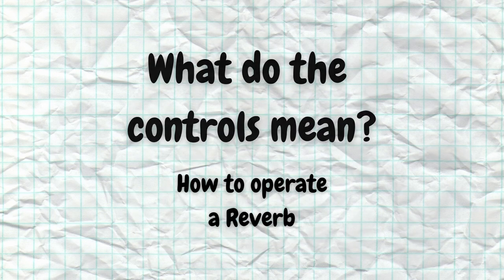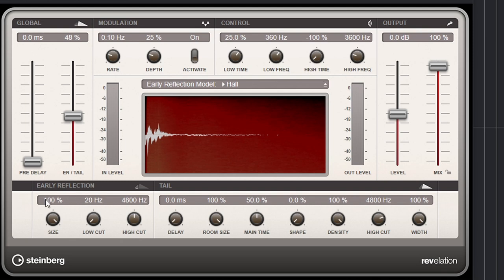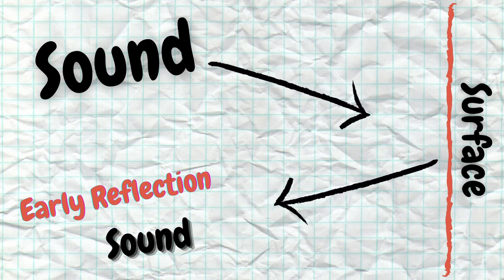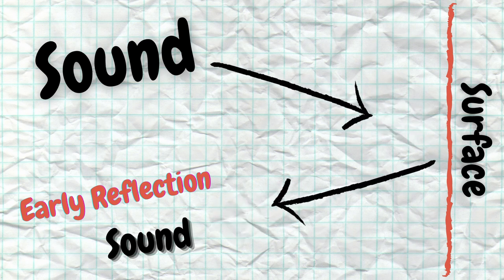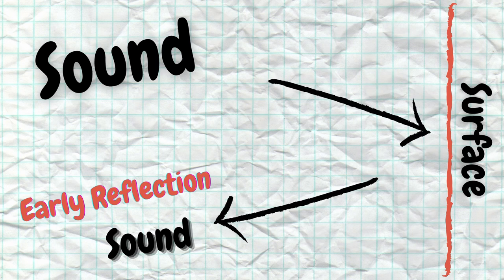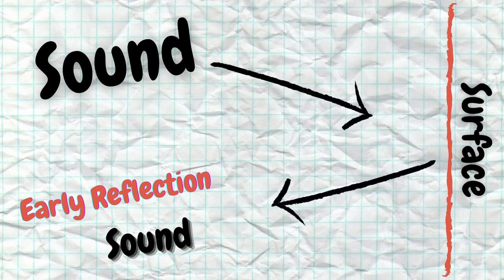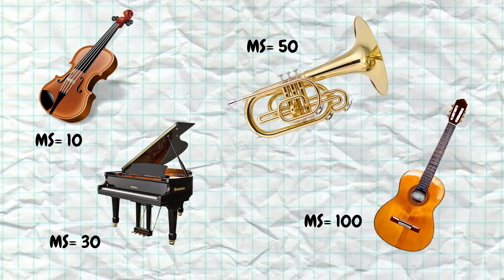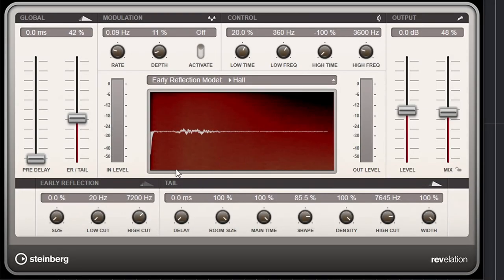What do the controls mean? Most reverbs are divided into early reflection and tail. Early reflection is a short delay, usually within 100 milliseconds — it simulates the time it takes for the original sound to bounce back from a wall. This makes it sound like there is a bigger or smaller room. If you are in a really big room, it takes more time for the early reflection to come back to your ears. You could actually place different instruments in a virtual room by giving them different early reflections. Tail is the biggest part of the reverb effect — what you hear the most. A huge tail is unnatural but can create interesting effects.